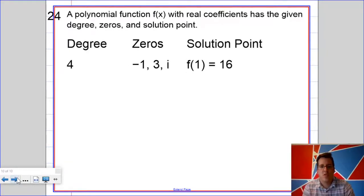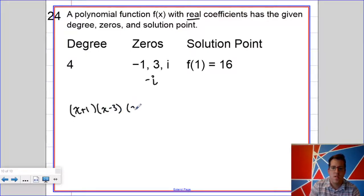And our final question is number 24. So fourth degree polynomial that has these zeros and also fulfills this solution point. Because I have real coefficients, that means my complex conjugates theorem is in play. So my fourth real zero is negative i. So I've got x minus 1 times x plus 1 times x minus 3 times x plus i times x minus i.